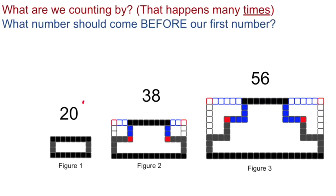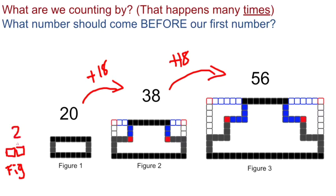So in this scenario, what are we counting by? We're counting by 18s. A lot of you found that out, counting by 18s. What number should come before the first number? What is figure number zero? Figure number zero has two squares in it because if I had to add 18 to get to 20, that means I must be starting with 2.